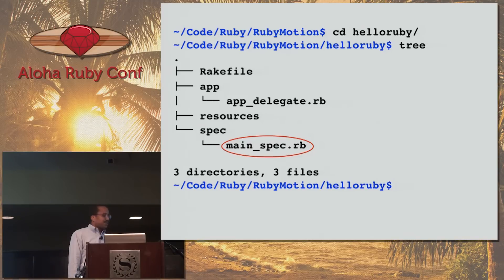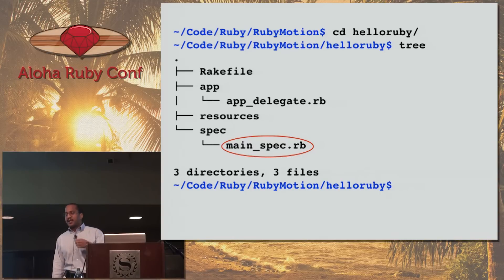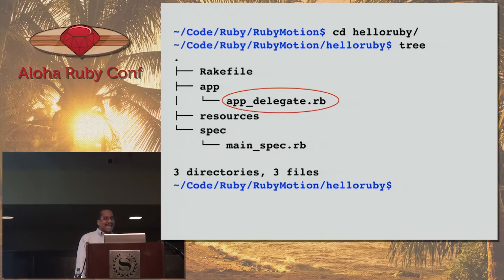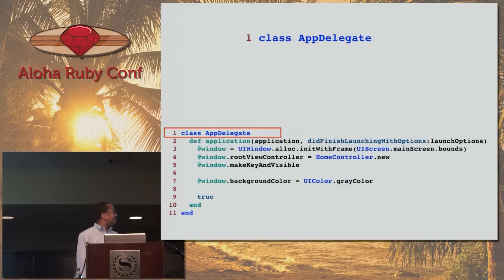The spec directory is where you put your specs, which look just like RSpec. RubyMotion uses an RSpec clone called MacBacon, and you put your automated tests in your spec directory — all of them end with underscore spec. And app_delegate.rb is the entry point for the application.